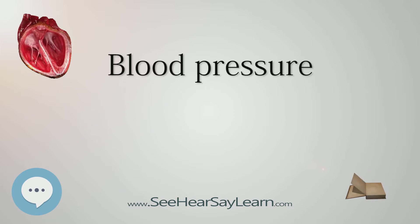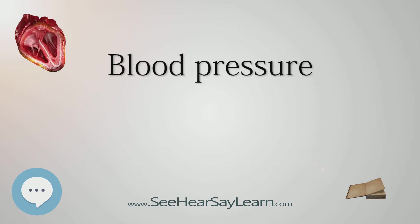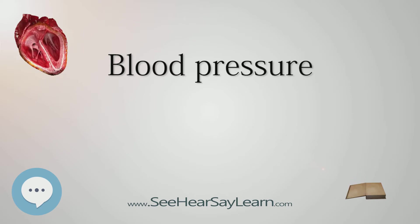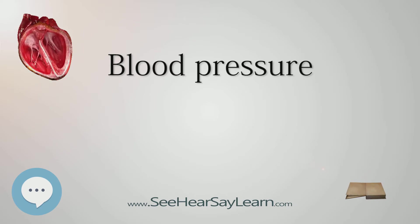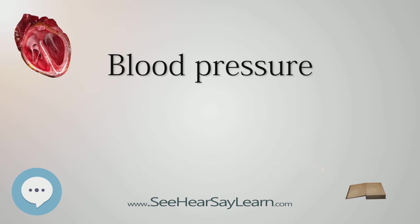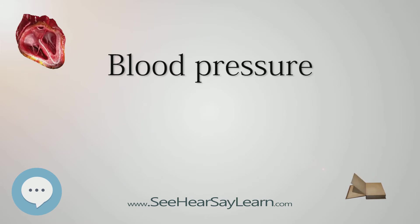Blood pressure is one of the vital signs, along with respiratory rate, heart rate, oxygen saturation, and body temperature. Normal resting blood pressure in an adult is approximately 120 mmHg (16 kPa) systolic and 80 mmHg (11 kPa) diastolic, abbreviated as 120/80 mmHg.